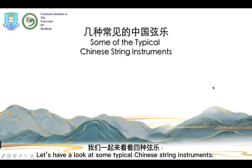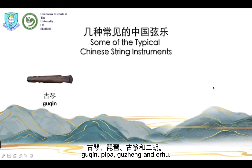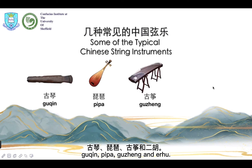Let's have a look at some typical Chinese string instruments: gu qin, pipa, gu zheng and erhu.